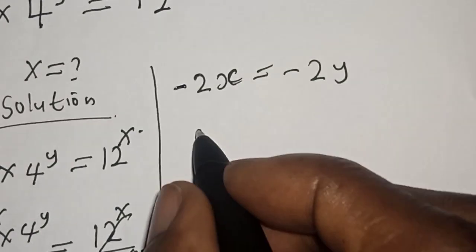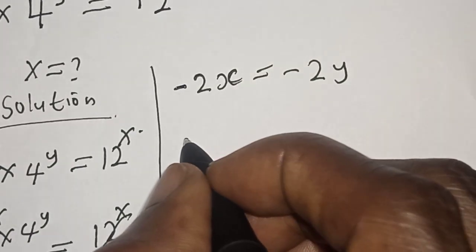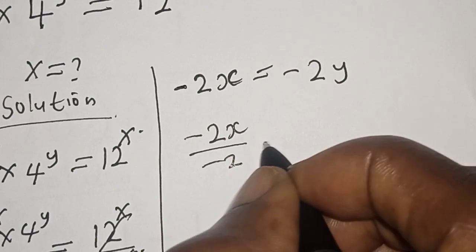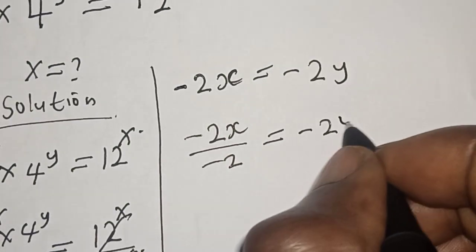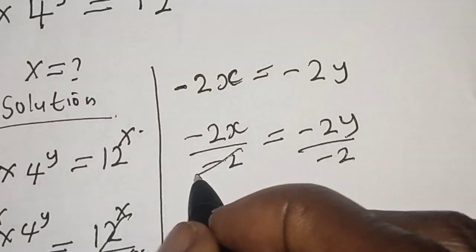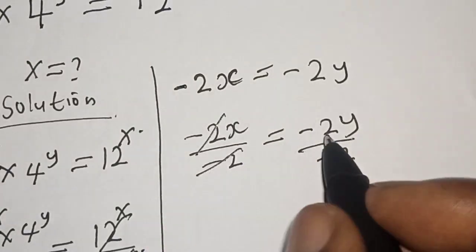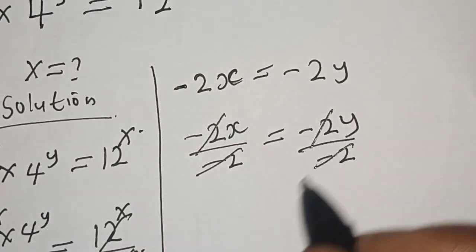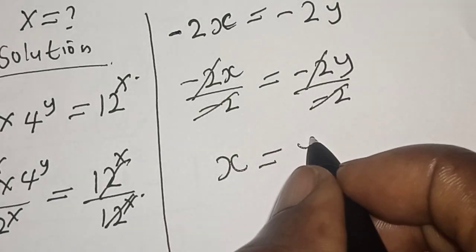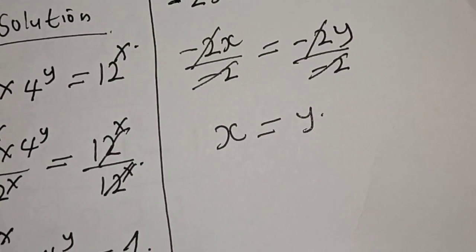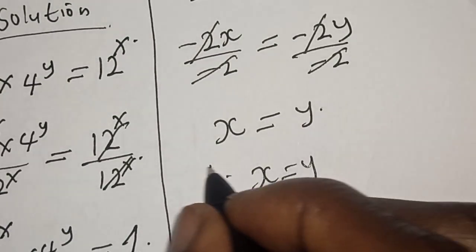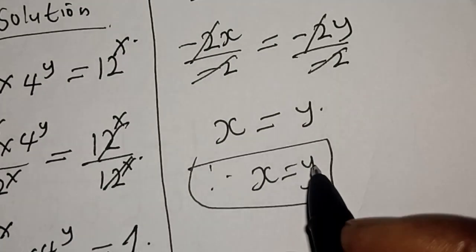Then let's divide both sides by minus 2. We have minus 2s over minus 2 is equal to minus 2y over minus 2. This cancels this, and this cancels this. We have s is equal to y. Therefore our final answer is s is equal to y.